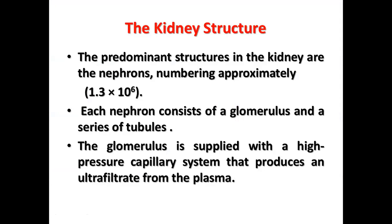There are about 1.3 million nephrons in each kidney. Each nephron consists of a glomerulus and a tubule. The tubule is divided into different segments.